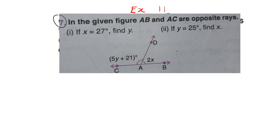In the given figure, AB and AC are opposite rays. AB here, AB and AC here, both of these are opposite rays, you can see. Now, it says, if x is equal to 27 degrees, find y. So, this 2x, you can see here, this one.